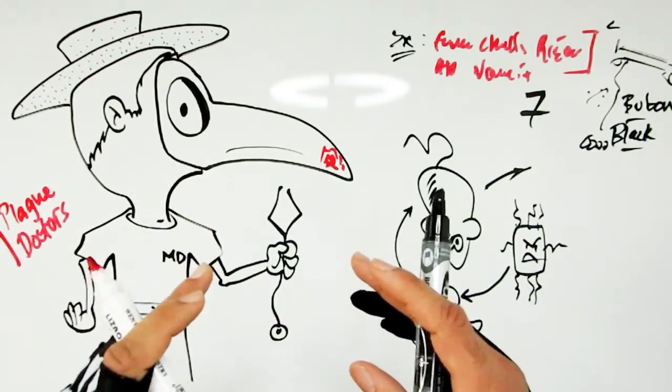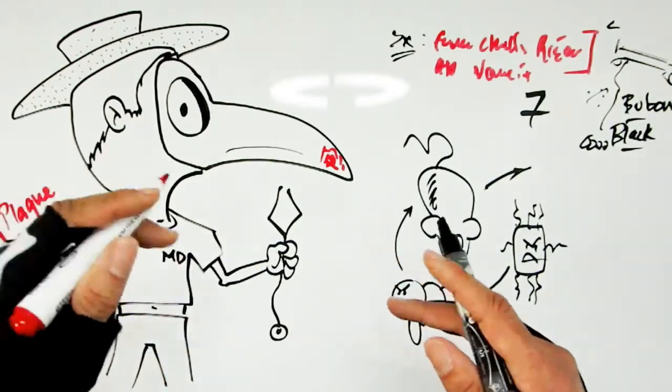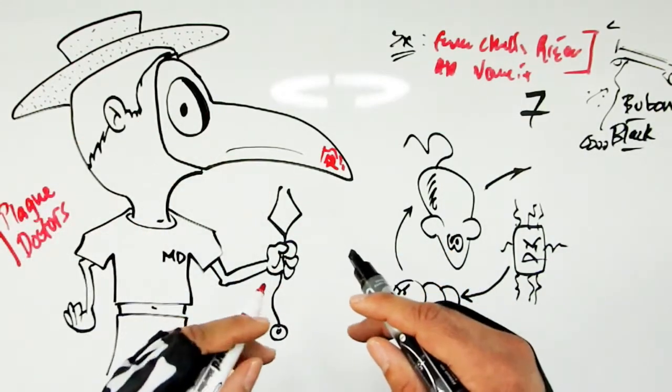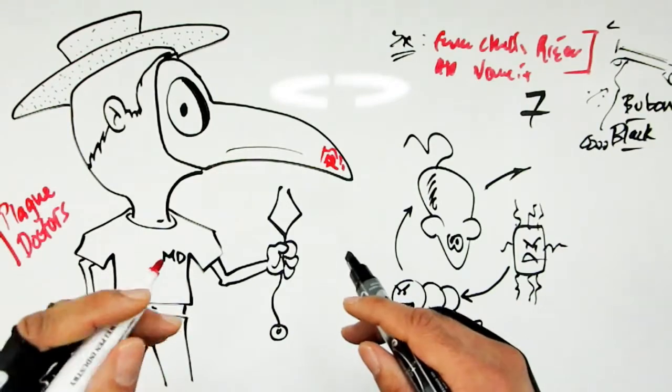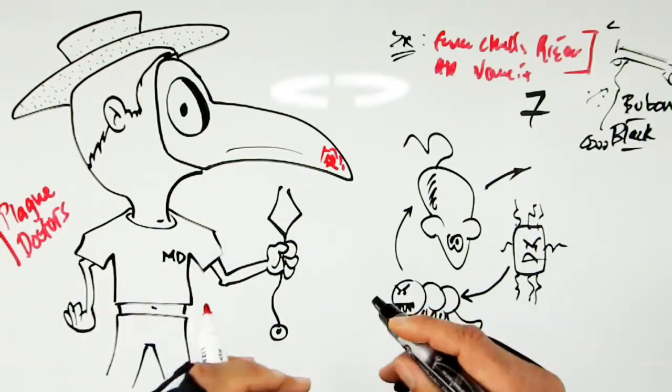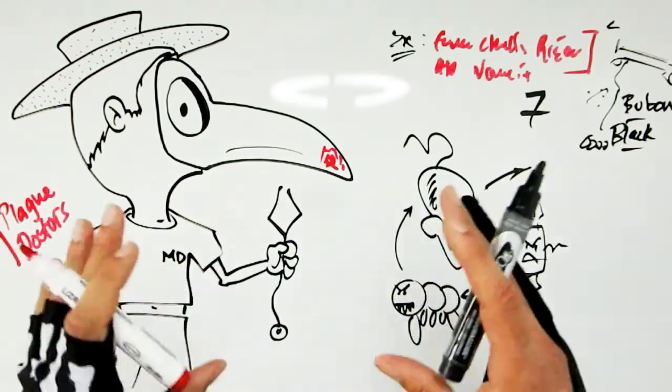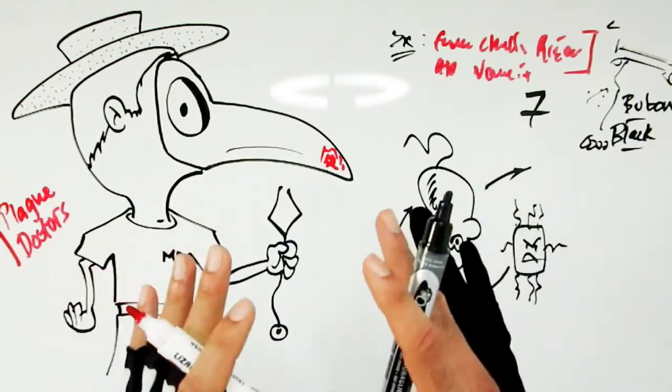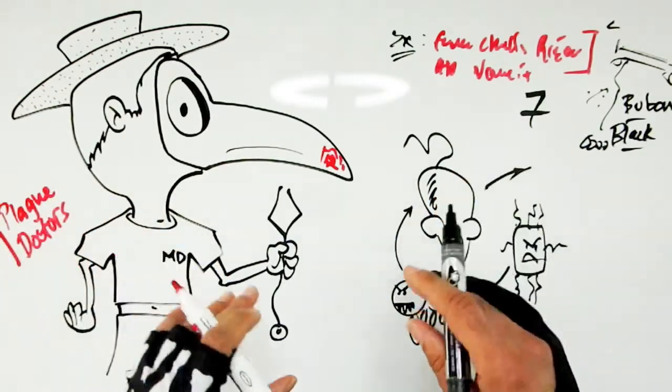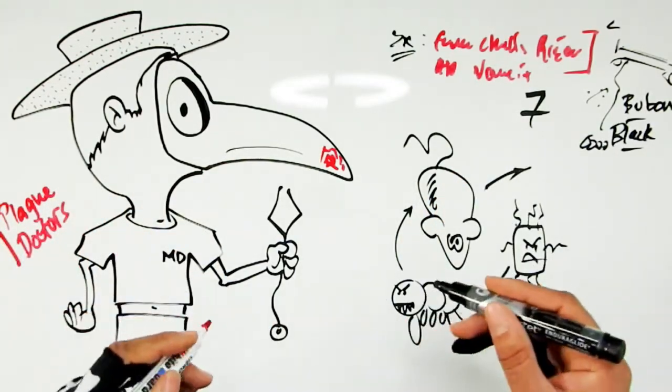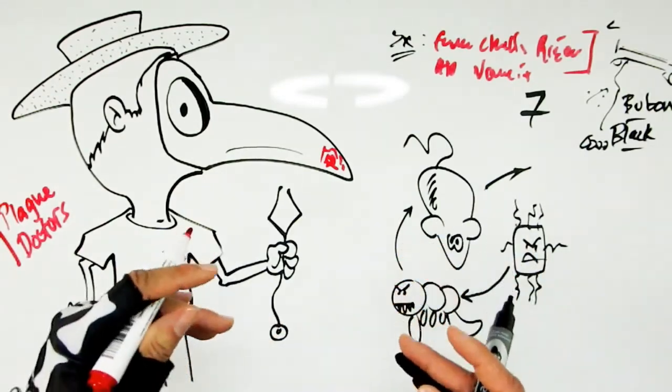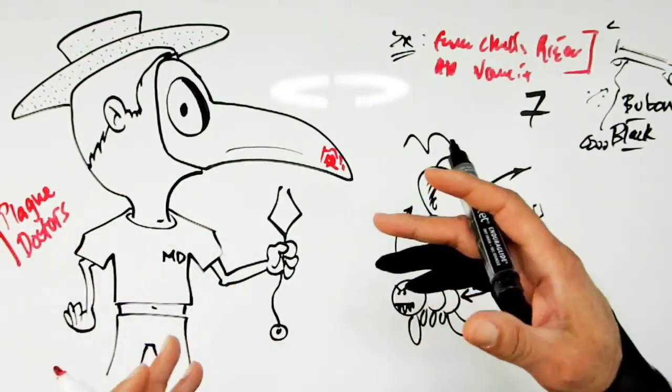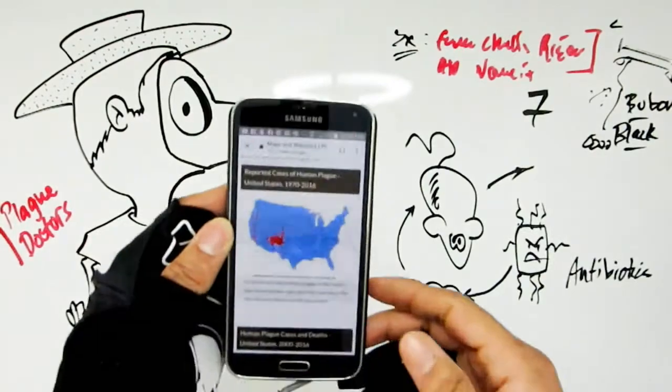In fact the last big outbreak in the United States was in the 1900s in San Francisco. The other place that is often still seen besides the west side of the US is in sub-Saharan Africa. So believe it or not, the black death, the plague, is not over, it still occurs.